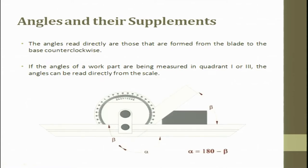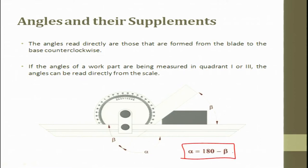Regarding the angles and their supplements — here is a work piece with a base, a protractor, and a knob used to slide. We want to find angles alpha and beta, where alpha plus beta equals 180 degrees. So if you want to exclusively find alpha, it is 180 minus beta. The angle with respect to the flat surface can be measured by bevel protractor.